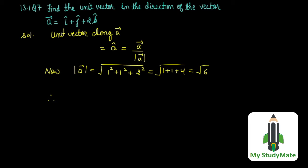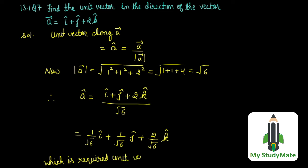Therefore, unit vector is equal to I cap plus J cap plus 2 K cap divided by under root 6, which can be written as 1 by root 6 I cap plus 1 by root 6 J cap plus 2 by root 6 K cap, which is the required unit vector along vector A.